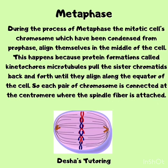During metaphase, the mitotic cell's chromosomes, which have been condensed from prophase, align themselves in the middle of the cell. This happens because protein formations called kinetochore microtubules pull the sister chromatids back and forth until they align along the equator of the cell. Each pair of chromosomes is connected at the centromere where the spindle fiber is attached.